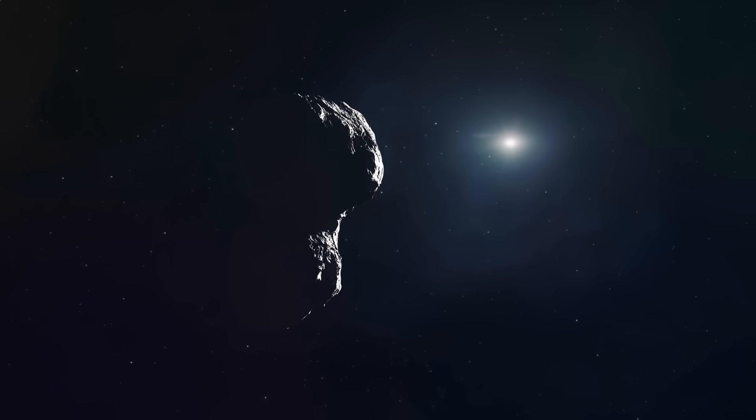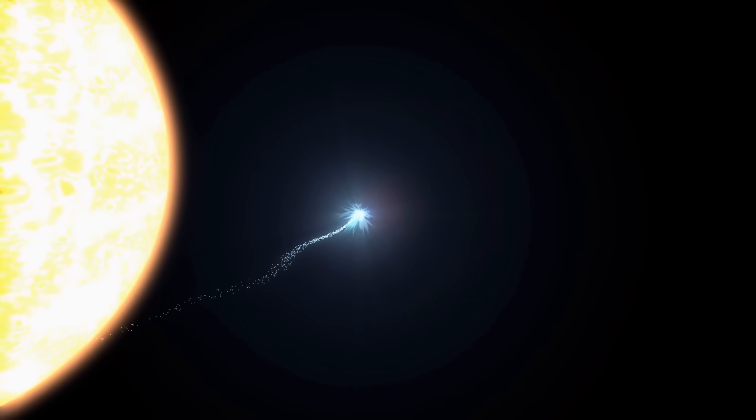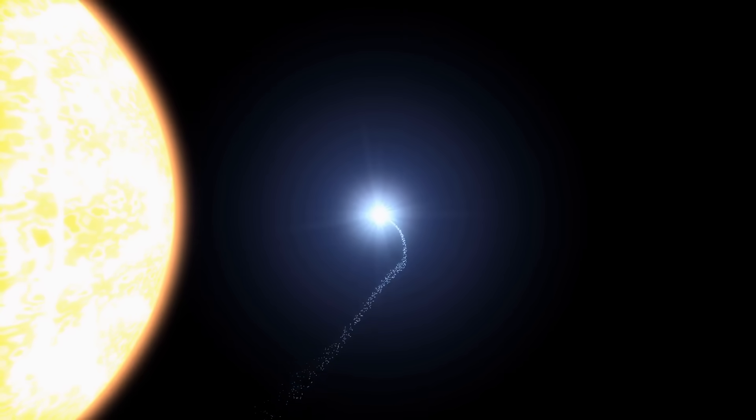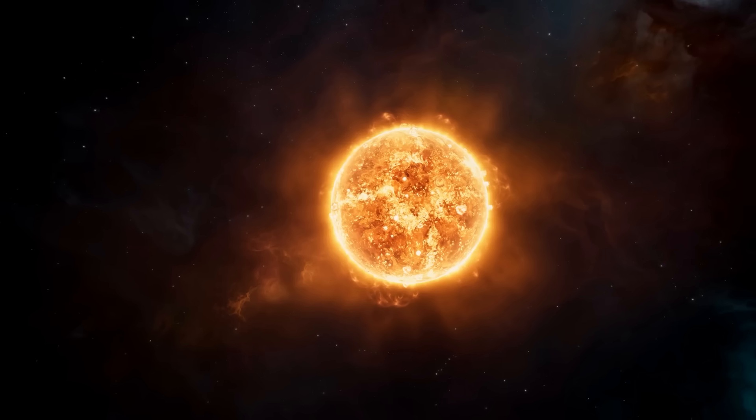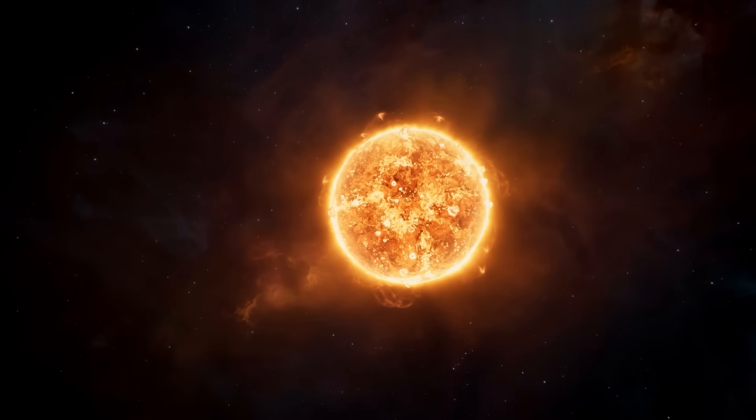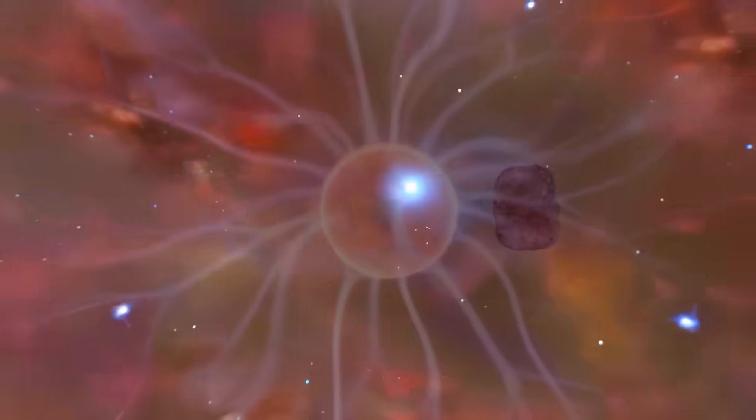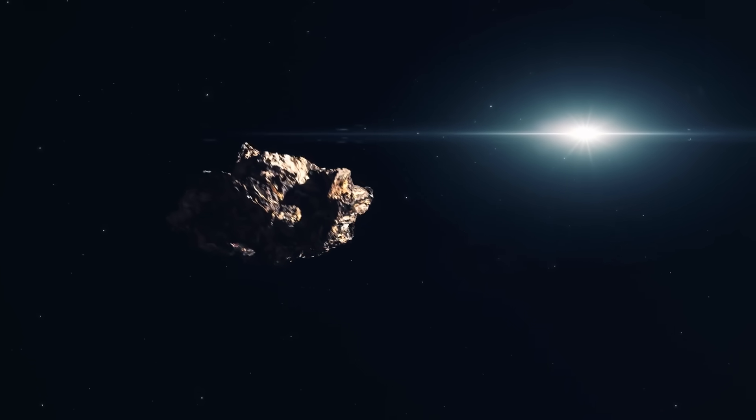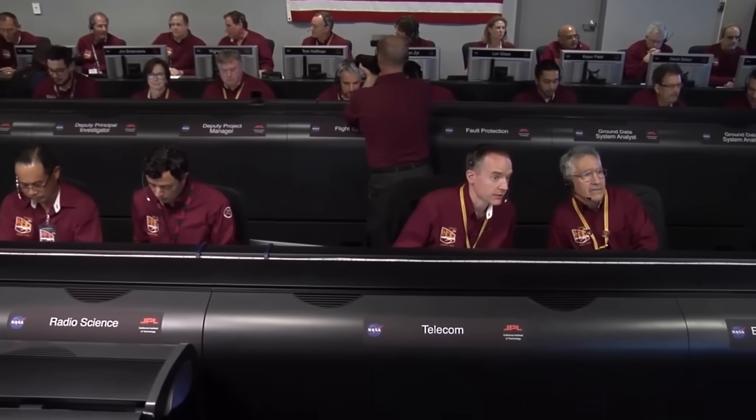But this is where the theories get wilder. Some researchers, speaking in hushed tones, are asking a different question. What if this passage behind the sun wasn't an accident of orbital mechanics, but a deliberate maneuver? What if 3I Atlas is not a comet, but a probe, and it used the sun as a cosmic smokescreen to perform a hidden objective? Perhaps it was refueling, drawing immense power from the star's plasma. Or maybe it was downloading data, using the sun's energy to transmit a message to its homeworld, a message we were never meant to intercept.